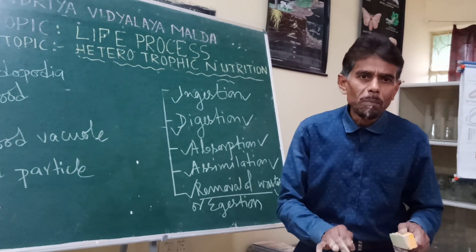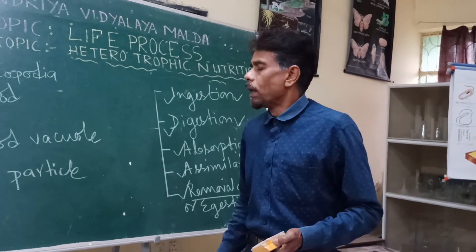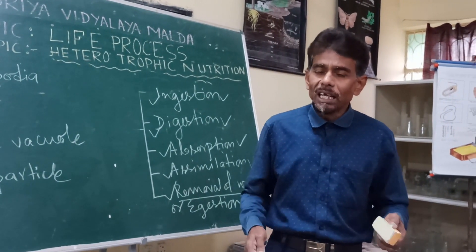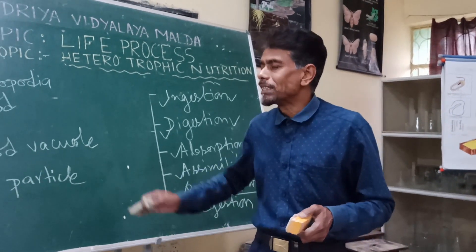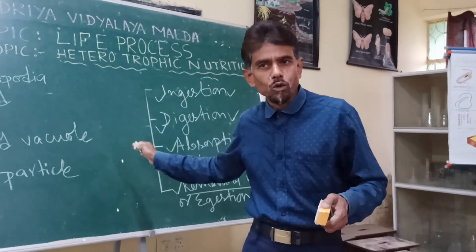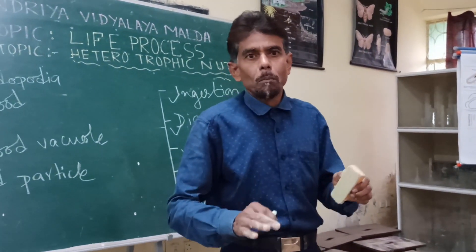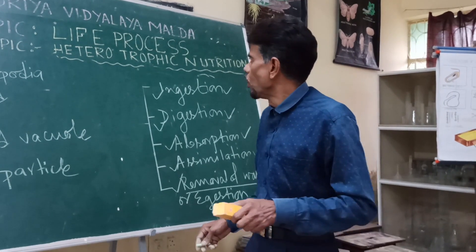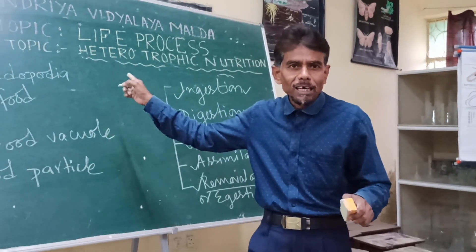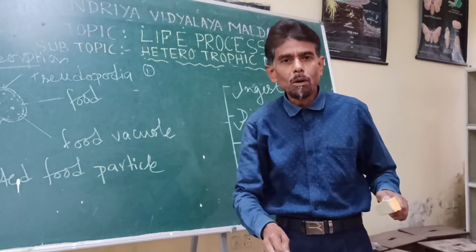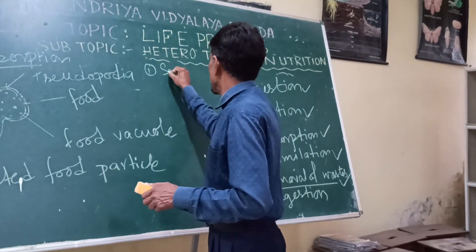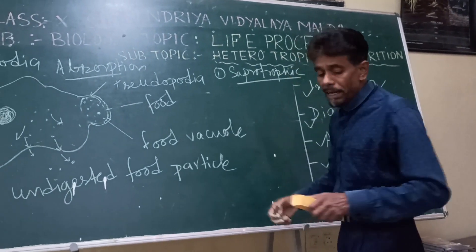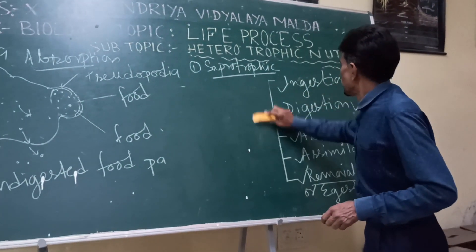In the case of human beings also, we follow the same steps. Human nutrition is heterotrophic, and specifically it is called holozoic nutrition. To summarize today's discussion on heterotrophic mode of nutrition: we have broadly categorized it into — number one, saprotrophic nutrition, which we see in case of fungi.